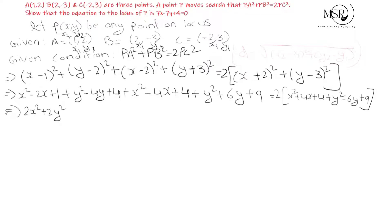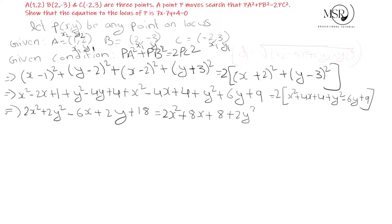Collecting x terms: -2x - 4x = -6x. Collecting y terms: -4y + 6y = +2y. Collecting constants: 1 + 4 = 5, 5 + 4 = 9, 9 + 9 = 18. On the right-hand side: 2 × x² = 2x², 2 × 4x = 8x, 2 × 4 = 8, 2 × y² = 2y², 2 × (-6y) = -12y, 2 × 9 = 18.